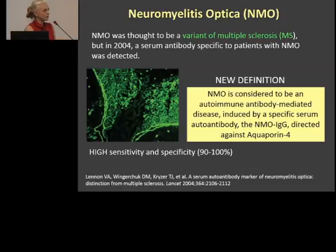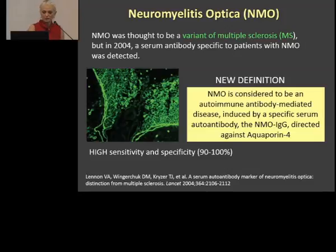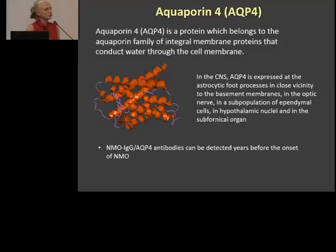Aquaporin-4. This is now a new definition of neuromyelitis optica. It's an autoimmune antibody-mediated disease induced by specific serum autoantibody directed against Aquaporin-4. The good news is we do have a test for this — a simple serum test with very high sensitivity and specificity. If patients have autoantibodies against Aquaporin-4, we want to know what Aquaporin-4 actually is. It is a protein.